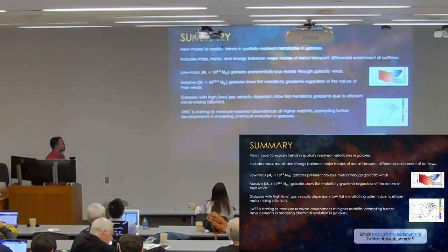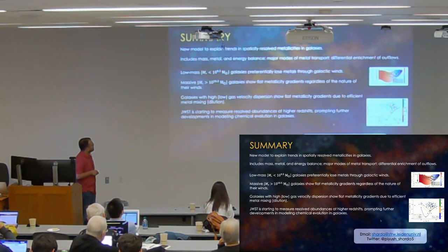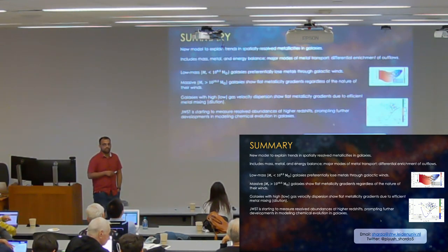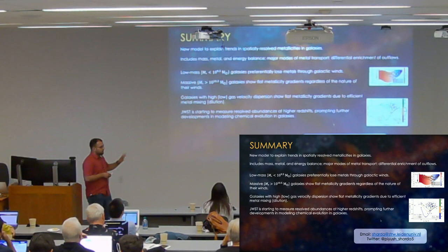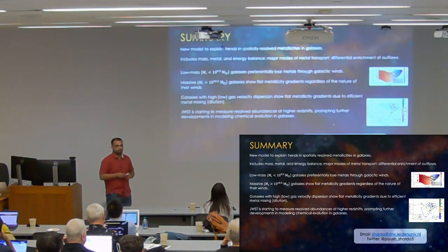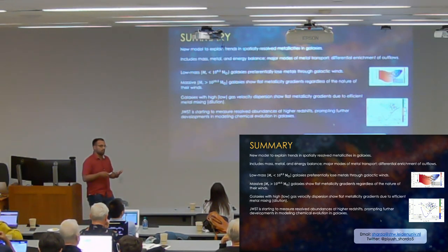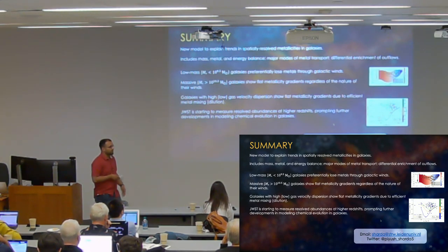So I'll just finish here. We have introduced a new model to explain trends in spatially resolved metallicities. There are some particular tests or applications of the model that are included in a bunch of papers. I presented a couple of them now. But this will become really more interesting at higher redshift with JWST in the future, but also for our own Milky Way with spectroscopic data like Apogee, LAMOST, and Gaia as well. So thank you for your attention. I'm happy to take any questions.